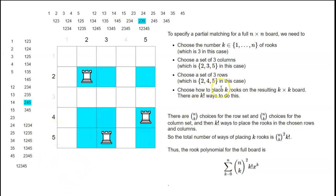More generally, if we want to look at the coefficient of x to the k, we have to place k rooks. We have to choose k columns for them to go in. There's n choose k ways to do that. Then we choose k rows, there's n choose k ways to do that. That gives us effectively a k by k board, and there's k factorial ways to place the rooks on it. So that gives us n choose k squared times k factorial as the coefficient of x to the k.